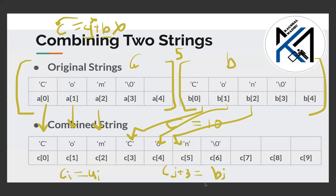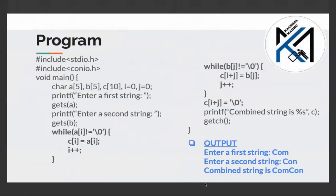We will write the value c[j+3] = b[j], producing the resultant concatenated string in array C.